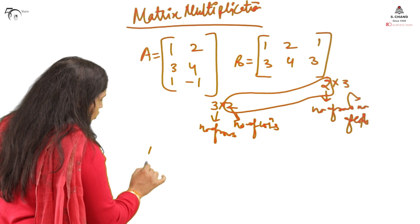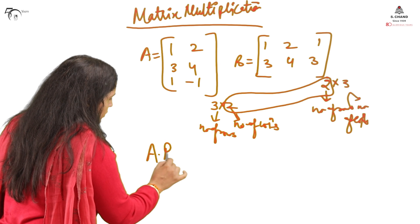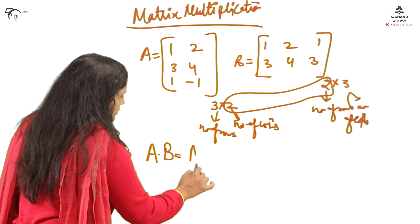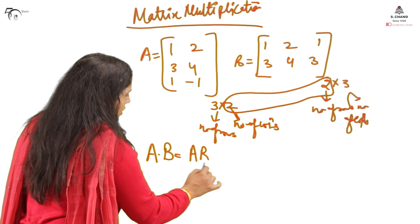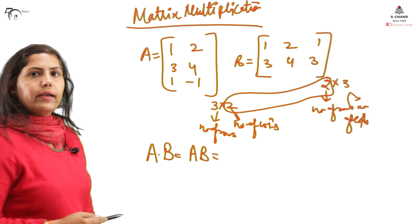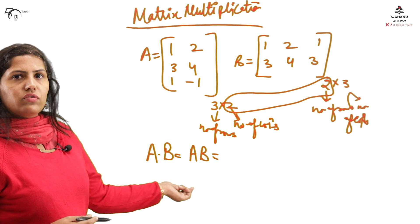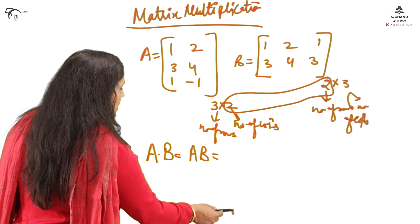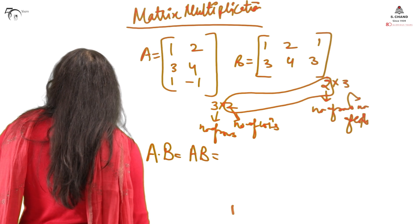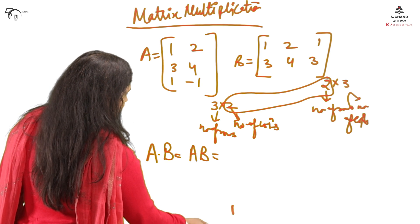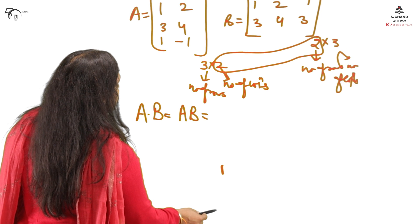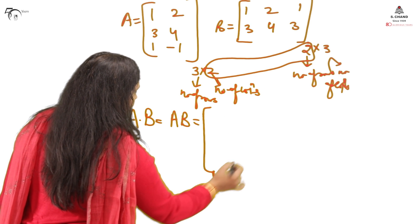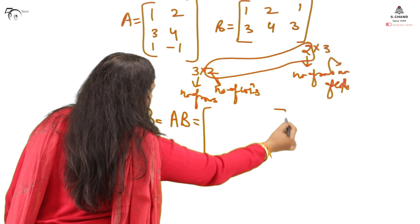The multiplication sign: we either write a dot or we don't write anything. Both are the same. If I write AB for matrices it is completely fine — AB is understood to mean matrix multiplication.